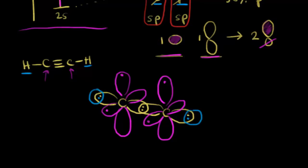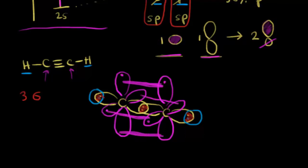Now we can analyze the bonding. Head-on overlap of orbitals gives a sigma bond. There is one sigma bond between carbon and hydrogen on the left, one sigma bond between the two carbons, and one sigma bond between carbon and hydrogen on the right — a total of three sigma bonds in acetylene. From the previous video on sp2 hybridization, we saw how pi bonds form from side-by-side overlap. Here we have one pi bond from side-by-side overlap above and below, and another pi bond from a second pair of p orbitals — giving two pi bonds in acetylene.